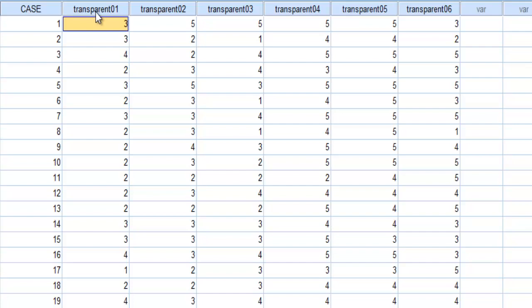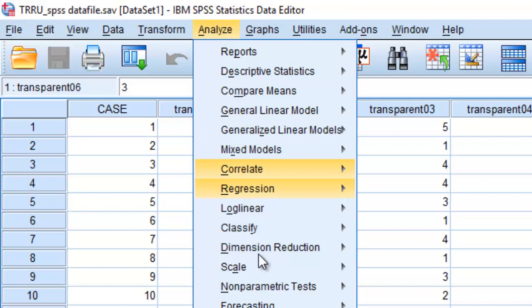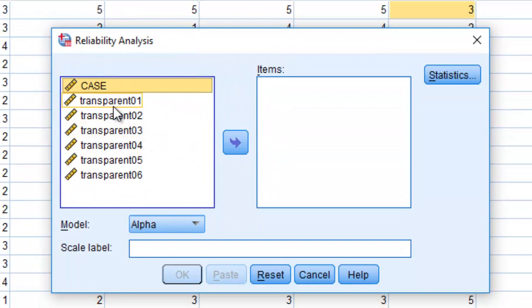Column one shows transparent item number one, item number two, three, four, five, and six. So we have six items that measure, all collectively designed to measure this concept called transparency. We want to know how consistent these items are in capturing that concept. So we go up to Analyze, go down to Scale, Reliability Analysis.